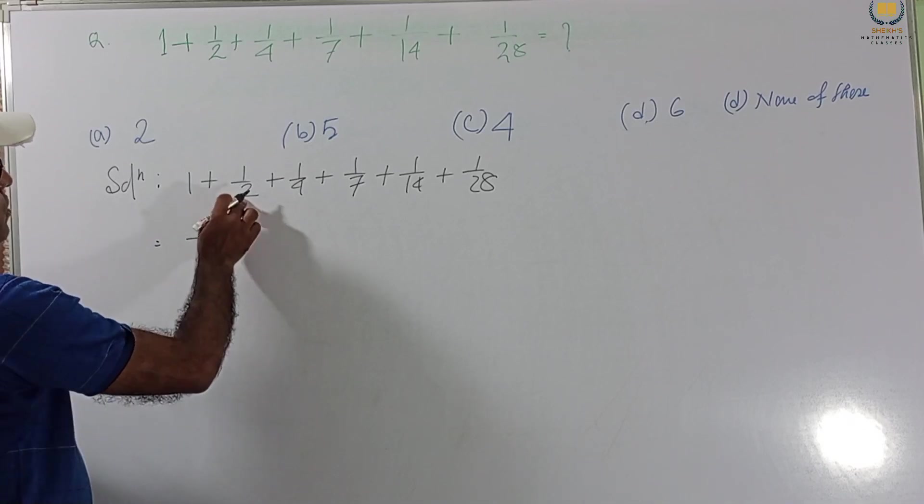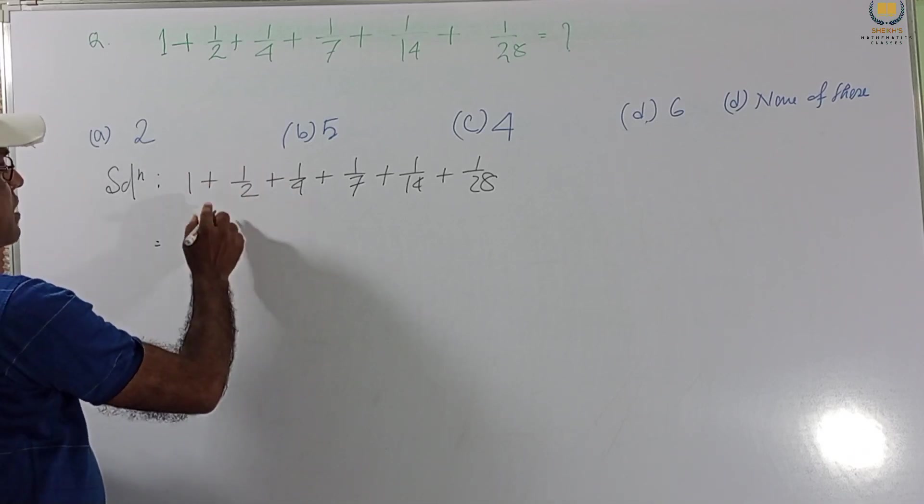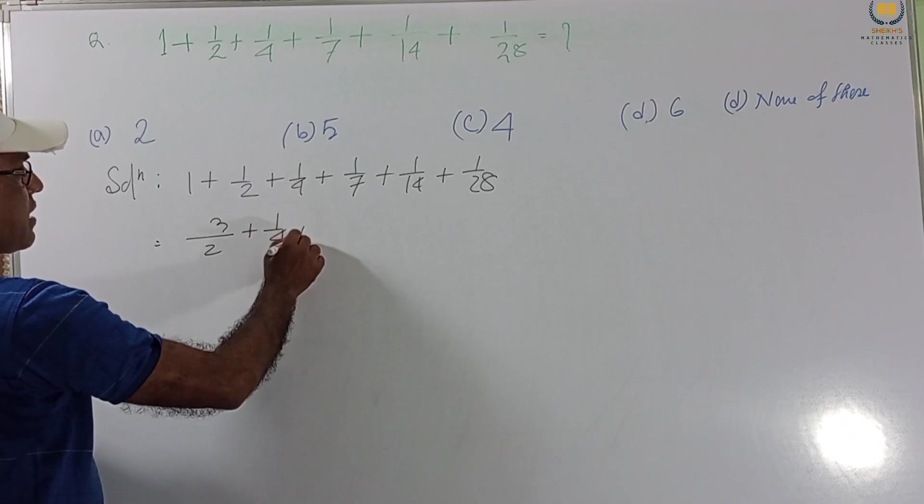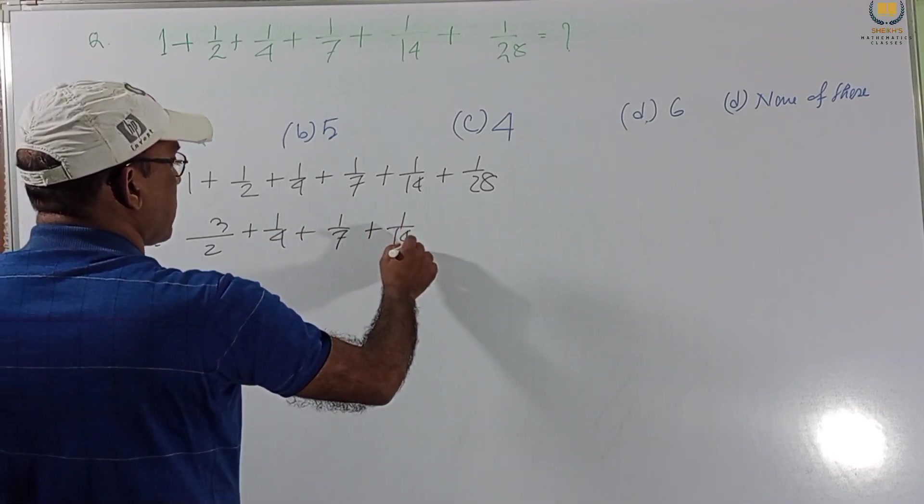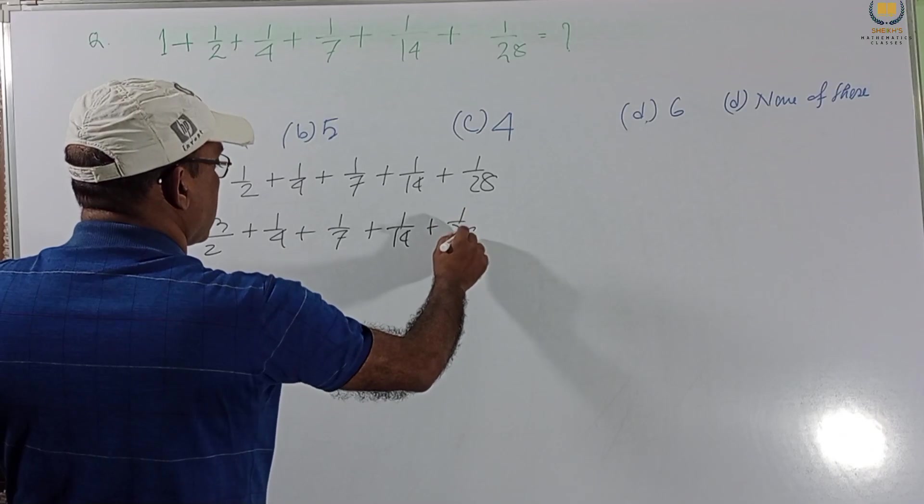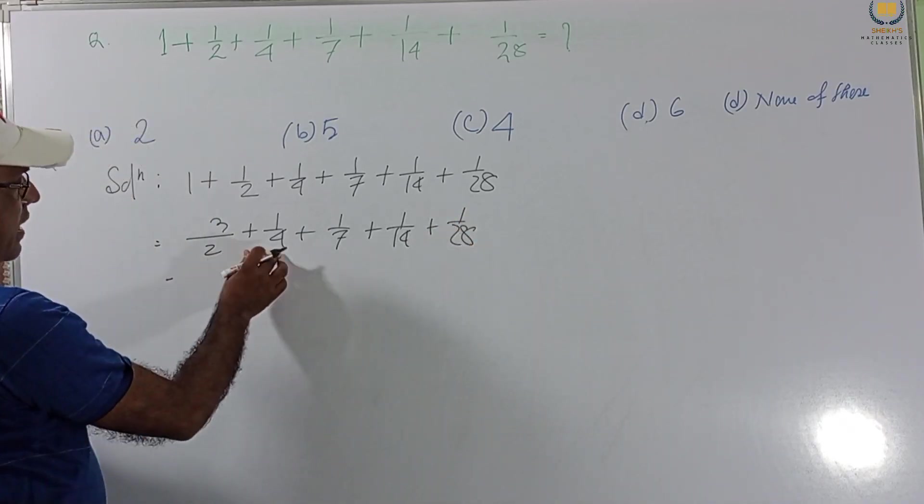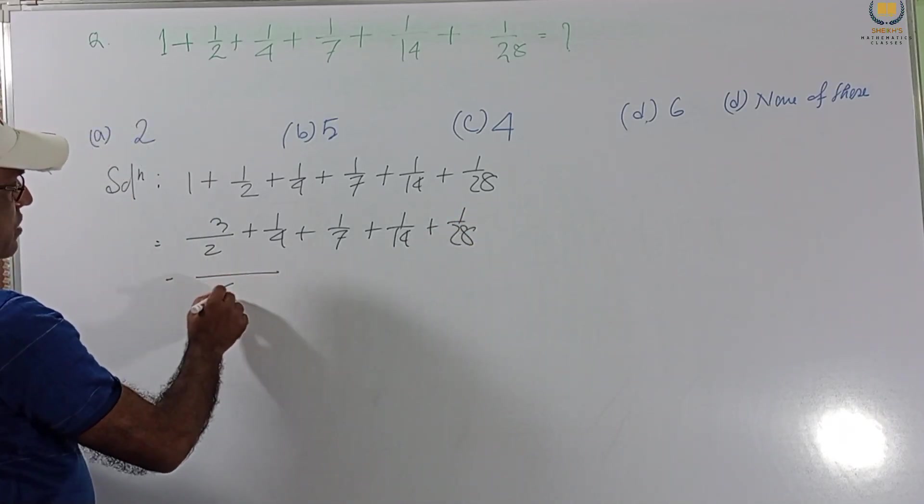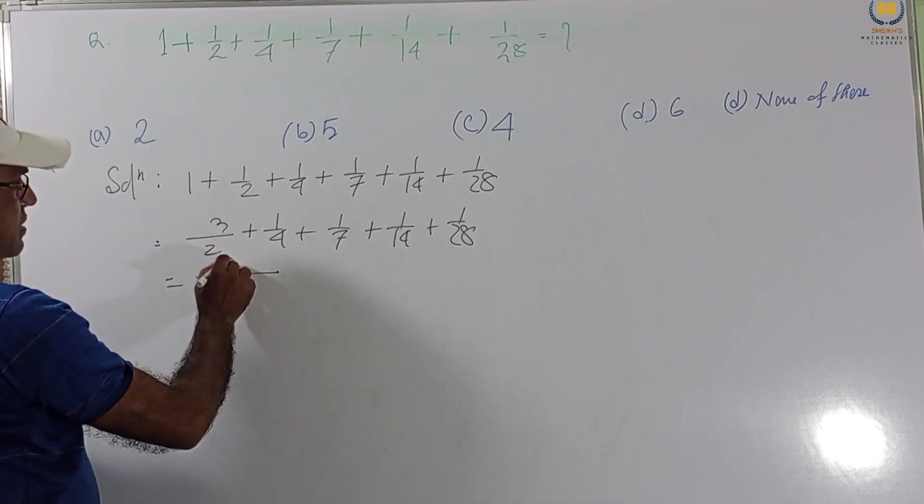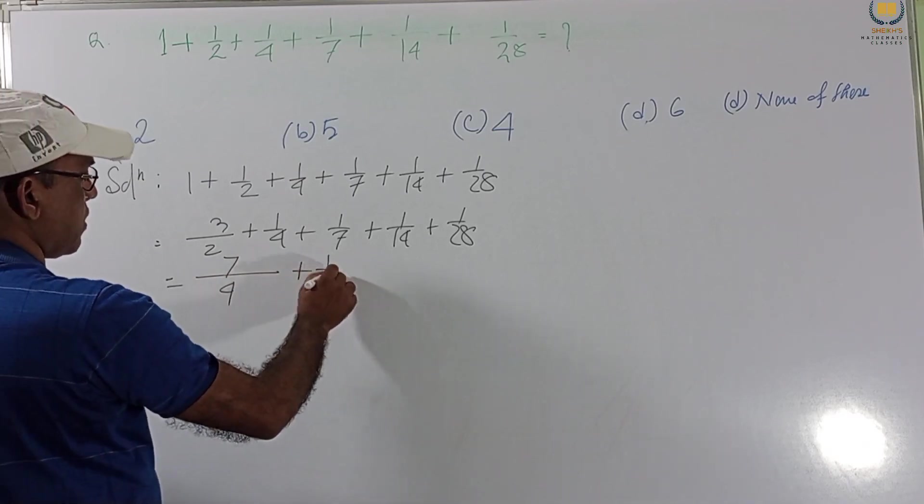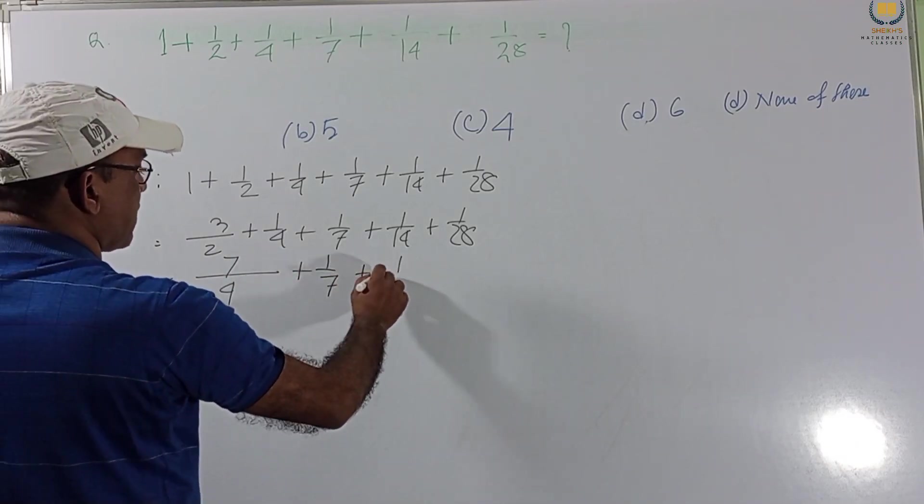And first we are taking LCM of these 2. This is 2. 2 plus 1, 3 by 2. And these are remaining same. Again, taking LCM of these 2. This LCM is 4. 2, 2 times. Then 6. 6 plus 1, 7. And these are remain same.